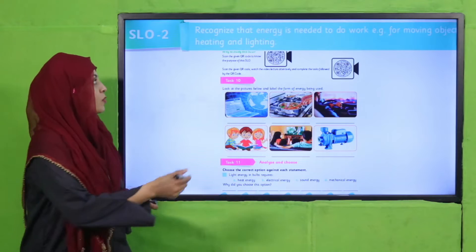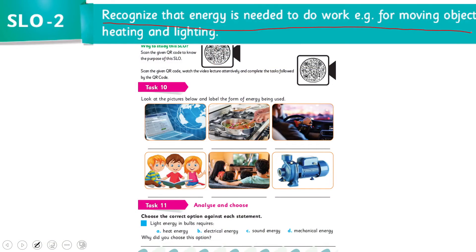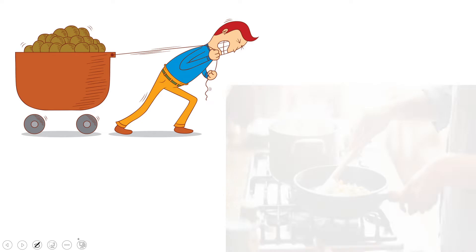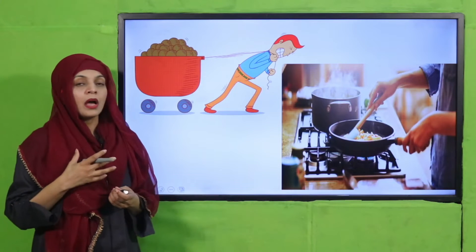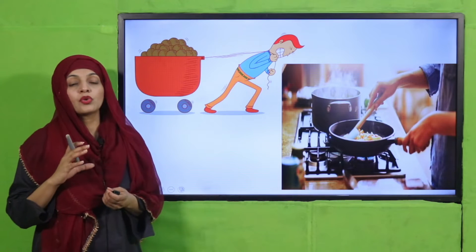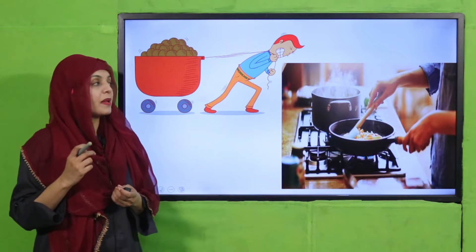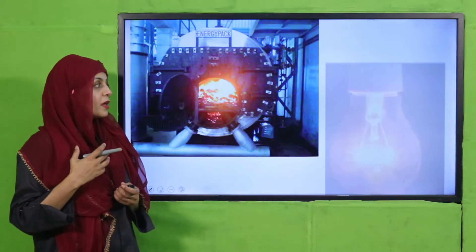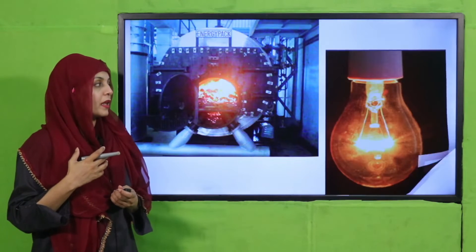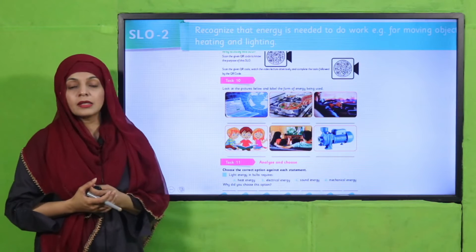According to this SLO, students will be able to recognize that energy is needed to do work — for moving objects, heating, and lighting. This SLO is being taught so that students understand that energy is required to move things and to perform a lot of work in our daily lives.